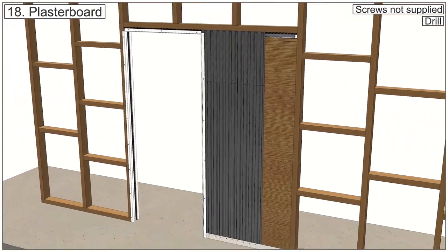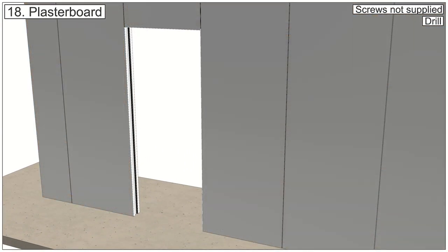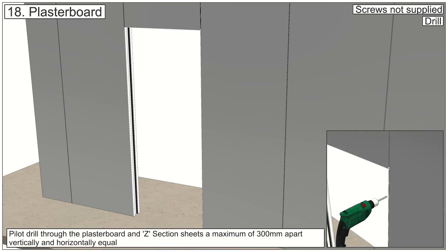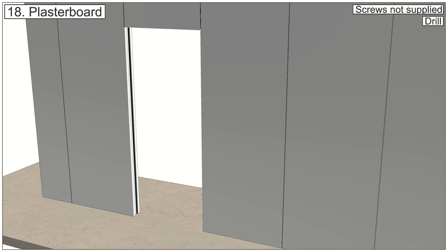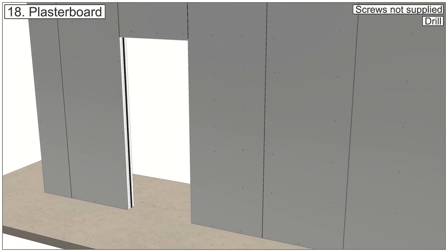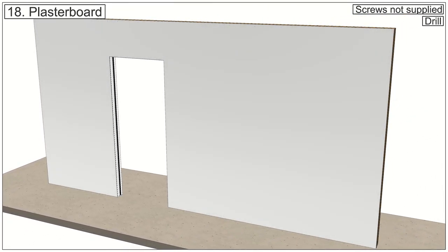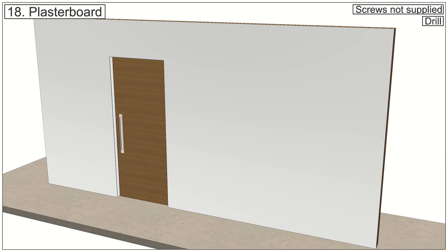Clad the kit in 12.5mm of plasterboard. Ensure it butts up level and tight against all jambs. Before screwing into place, pilot through the plasterboard and Z section. Ensure no screws protrude into the pocket cavity.